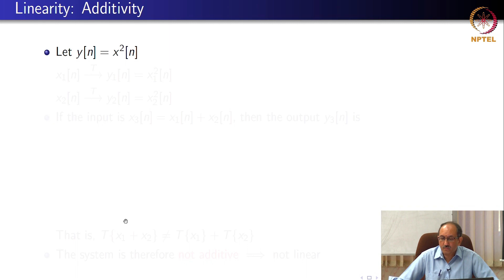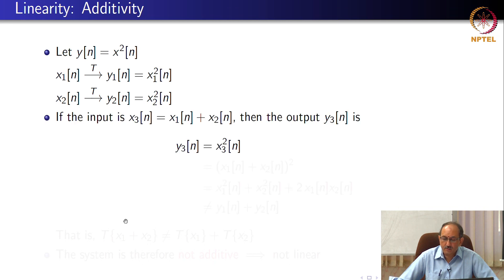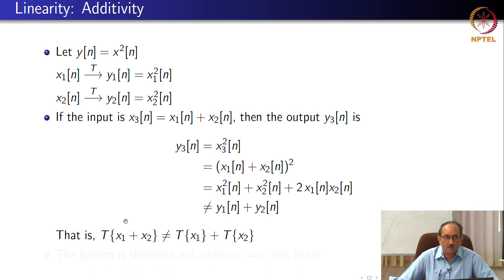Suppose you have y[n] equals x²[n], then x1 produces y1 which is x1 squared, x2 produces y2 which is x2 squared, and the combination is x1 plus x2. Clearly, (x1 plus x2)² does not produce y1 plus y2. So, here is a system that is not additive. Therefore, this is not linear.